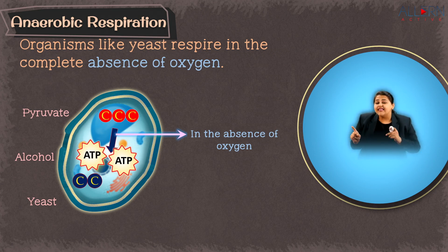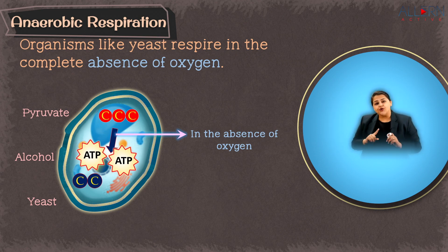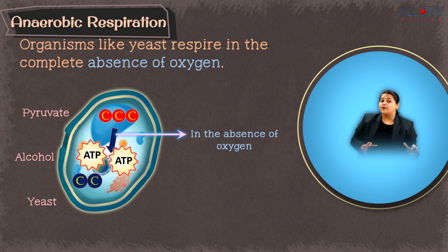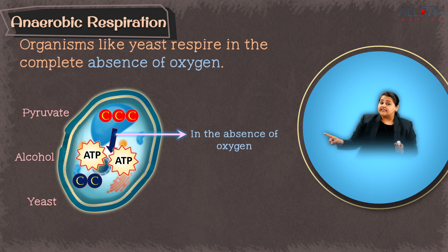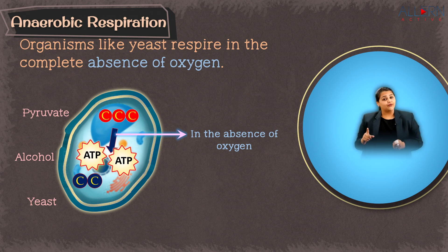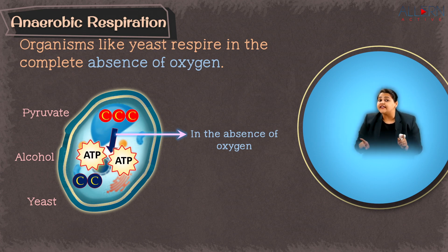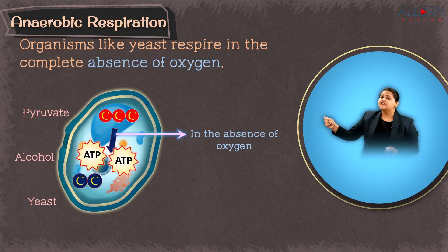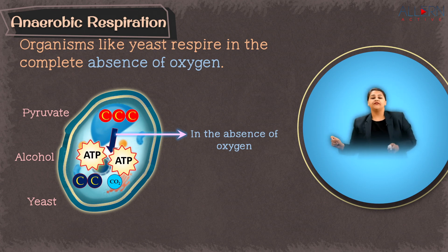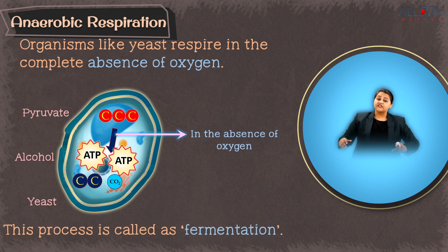The pyruvate produced by glycolysis will not completely break down into acetyl coenzyme A as in aerobic respiration. Because oxygen is absent, the pyruvate breaks down into alcohol instead of acetyl coenzyme A, releasing carbon dioxide along with less amounts of ATP. This process is called fermentation.